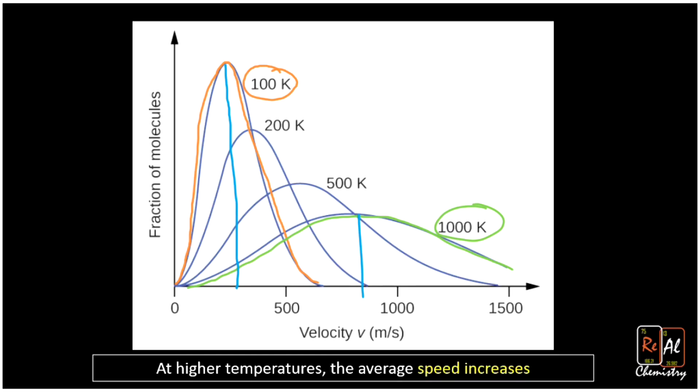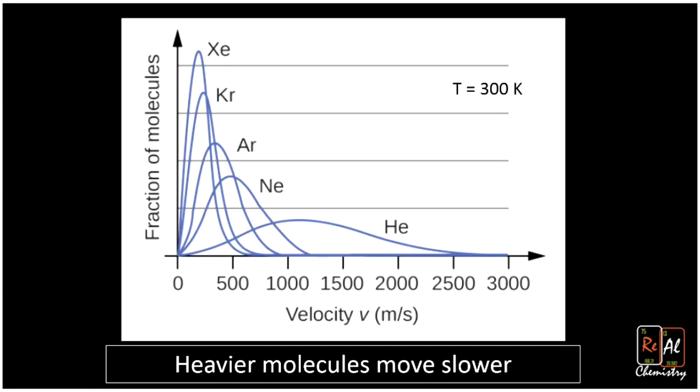What we haven't considered yet is the mass of the molecules. It turns out that heavier molecules move slower. Again, we have a bunch of molecules, all at 300 Kelvin. We see that this first curve for xenon has the lowest speed, maybe just 250 or so meters per second. That's the heaviest molecule.